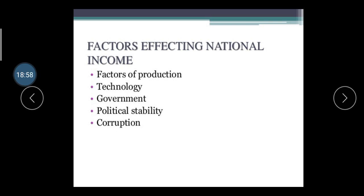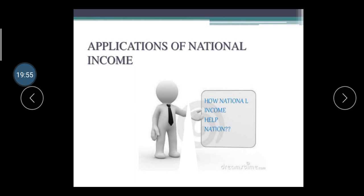Third, government policies — if the government introduces policies suitable for the primary and secondary sectors, those sectors earn higher profit and contribute to higher national income. Fourth, political stability — frequent changes in government create different rules and conditions that directly impact sectors like automobiles and textiles. Fifth, corruption — if corruption decreases, we can find the correct national income; if corruption is high, the true national income cannot be determined.